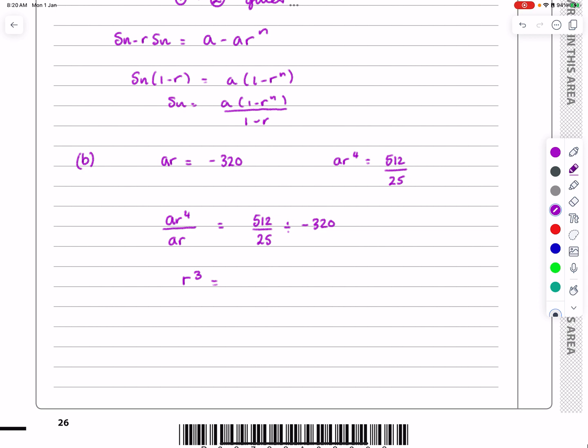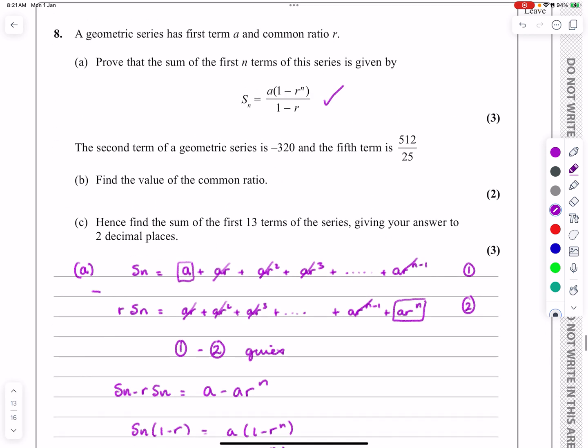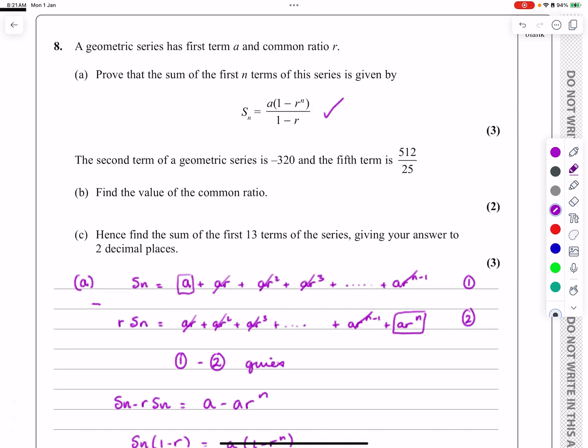We're going to get r cubed worked out to be 512 over 25 divided by minus 320, which works out to be minus 0.064, which might look a bit worrying at first. But when we cube root it, that actually works out to be minus 0.4. Oh right, that's good, that's a nice neat answer for that set of information.